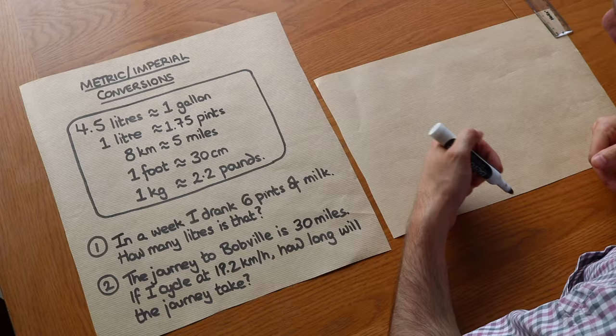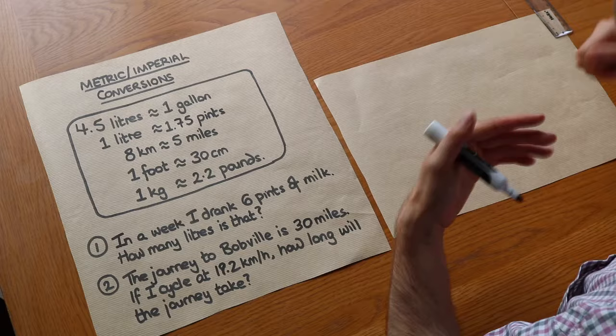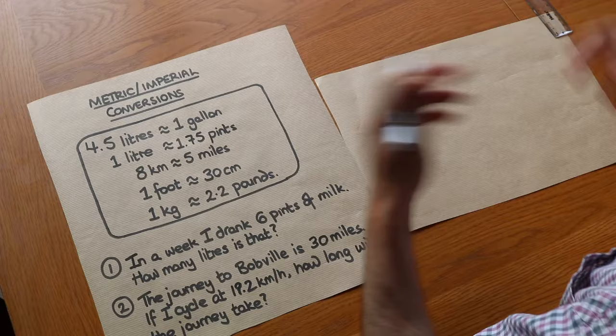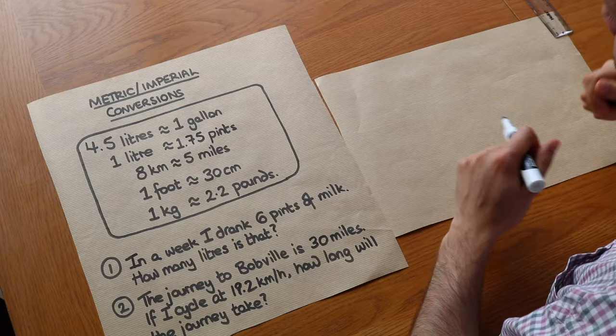So for example 1 kilometre is 1,000 metres, 1 centimetre is 10 millimetres, 1 litre is 1,000 millilitres, so everything is in powers of 10 and that makes it a metric unit. Whereas imperial units are more traditional units where the conversions are not quite as neat as that.